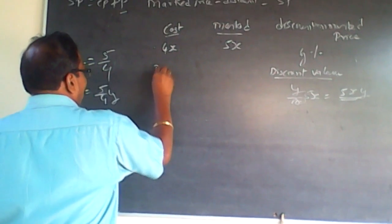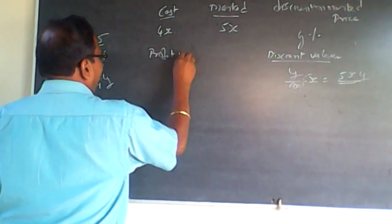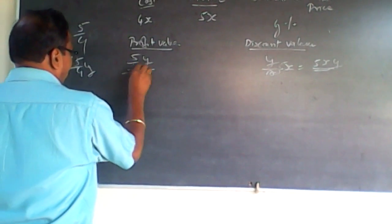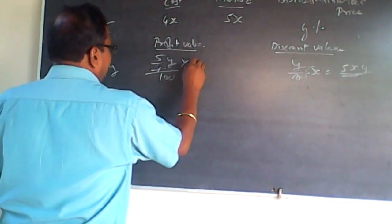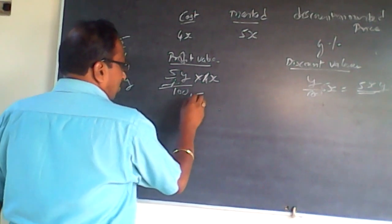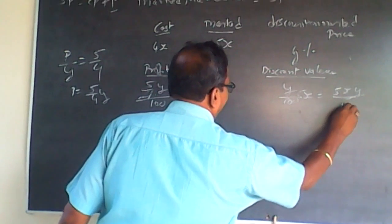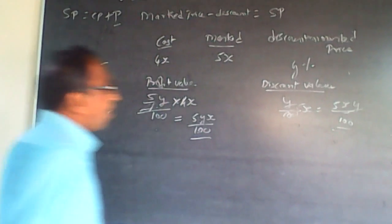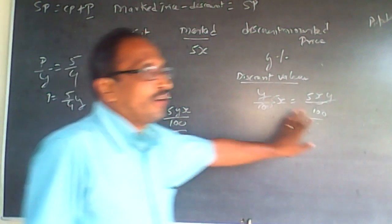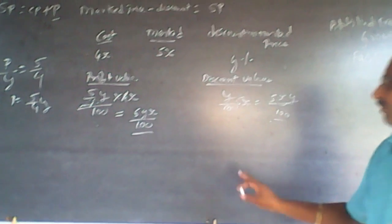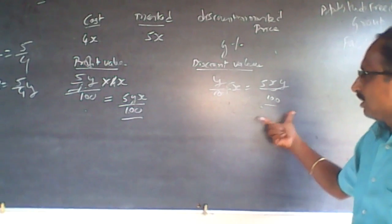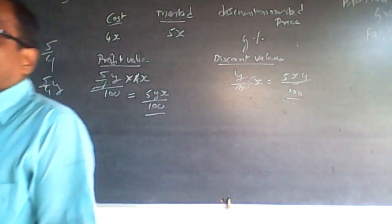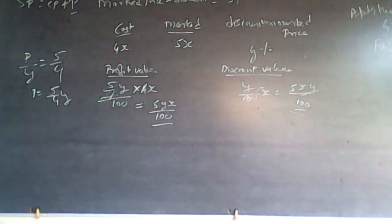So the profit value will be (5/4) × (Y/100) × 4x. The 4 cancels out, giving 5xy/100. Both the discount value and profit value are equal — both equal 5xy/100. I will make this equal to some variable A.